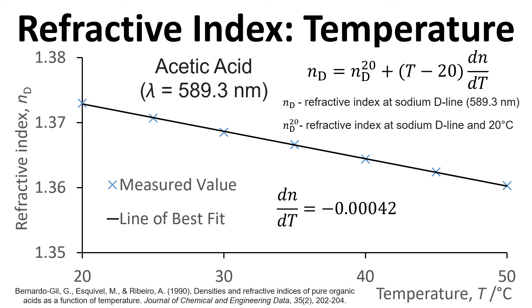Then we have plus (T - 20) times dN/dT. That dN/dT is just the constant that we saw earlier, and it depends on wavelength and the material we're interested in. The T value here is just the temperature in degrees C. We can use this information to look at how refractive index varies with temperature.